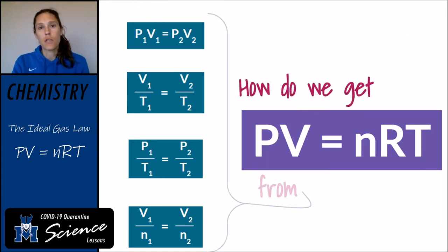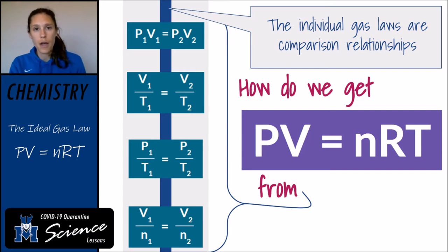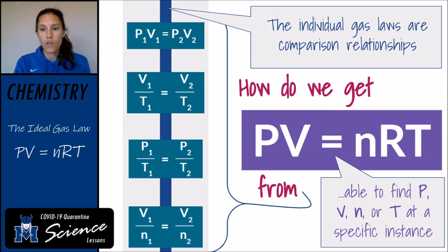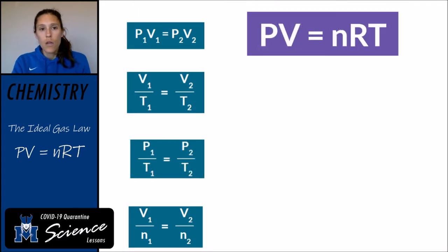How do we get PV equals nRT from the individual gas laws? These individual gas laws are comparison relationships — you're looking at the conditions of a gas before and after some sort of change while holding some variables constant. But the ideal gas law is able to actually find pressure, volume, amount, or temperature given the other three conditions at any particular point in time. PV equals nRT is derived from these four individual gas laws.